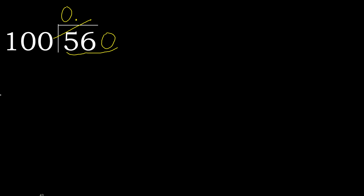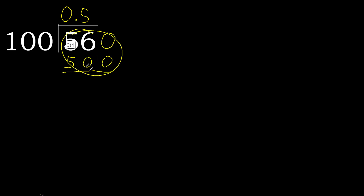100 multiplied by 6 is 600 — it's greater. Multiplied by 5 is 500 — it's not greater. Subtract. Next: there is no number, therefore complete. Always complete with 0.